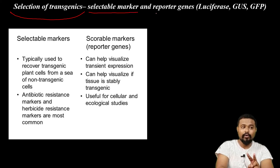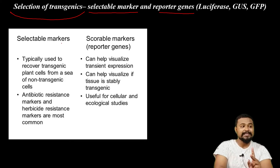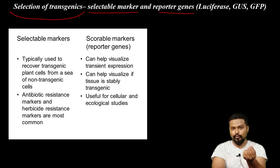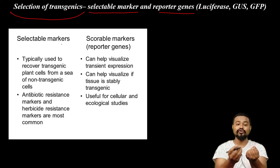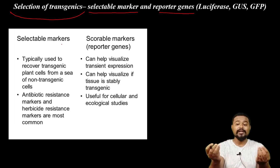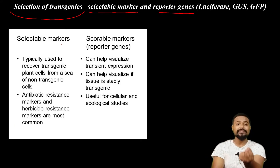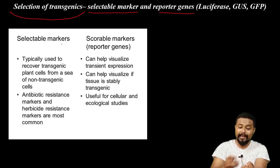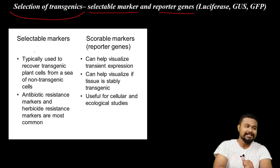Selectable markers and reporter genes — there is a difference between them. When I transform a cell, I need to select the non-transformed cell. If you have a cell that is successfully transformed, how do you select this transformed cell? With the help of selectable markers.